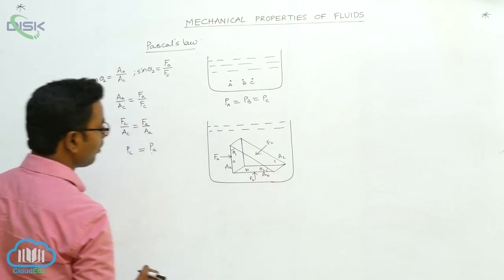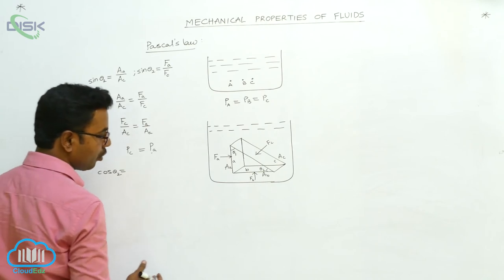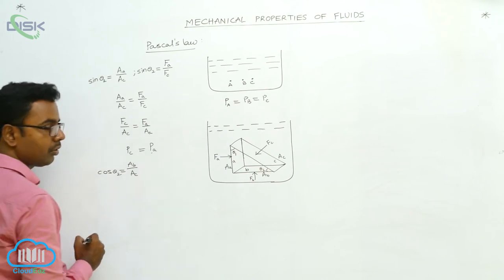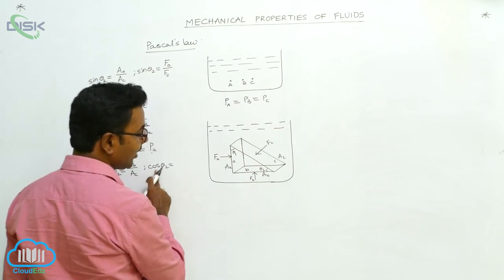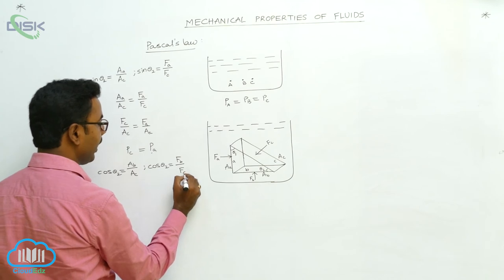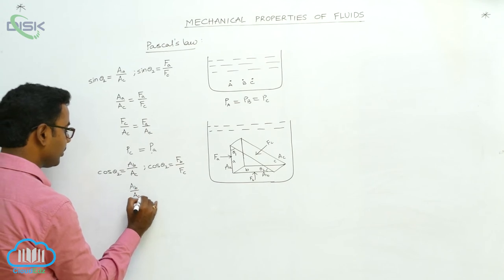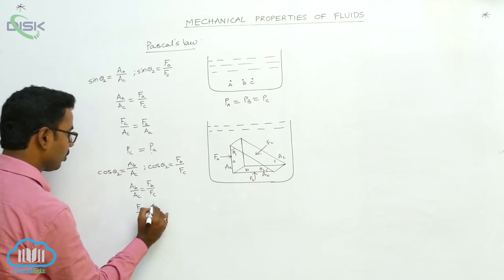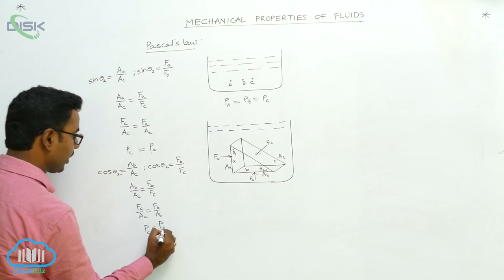Now applying cosine theta 2. Cosine theta 2 for areas: cosine means adjacent over hypotenuse, so cosine theta 2 equals A_B over A_C. Similarly, applying cosine theta 2 for forces: cosine theta 2 equals F_B over F_C. Since cosine theta 2 is the same, we equate: A_B over A_C equals F_B over F_C. Doing cross multiplication: F_C over A_C equals F_B over A_B. F_C over A_C is the pressure on face C, and F_B over A_B is the pressure on face B.